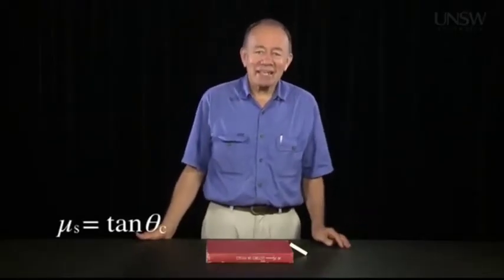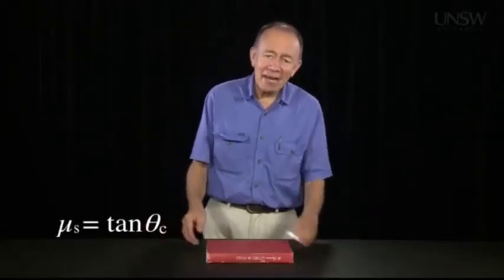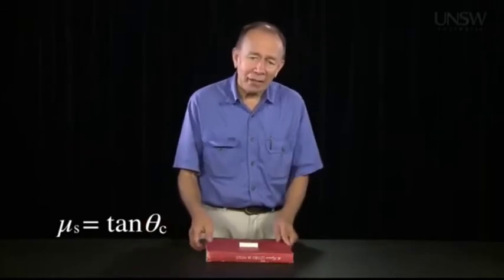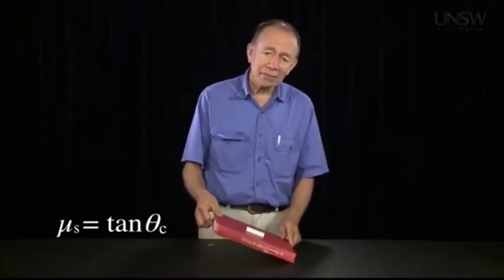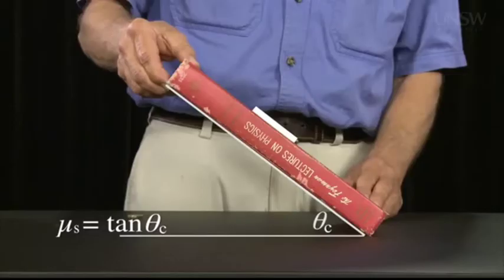You did that. Well done. Yes, the tan of the critical angle gives the coefficient of static friction. So for the rubber on this book, we can get the coefficient of static friction from the critical angle.